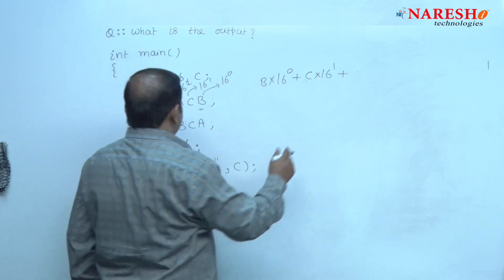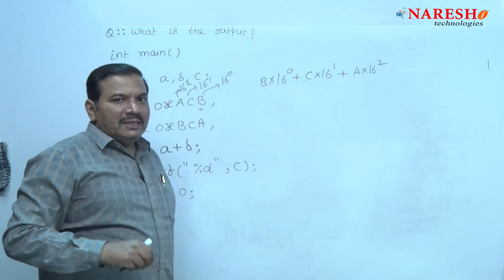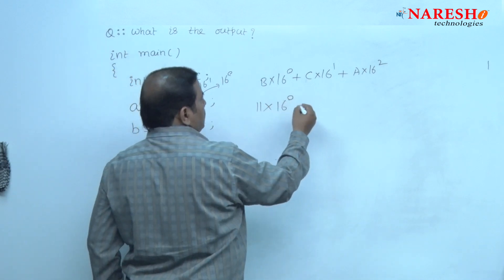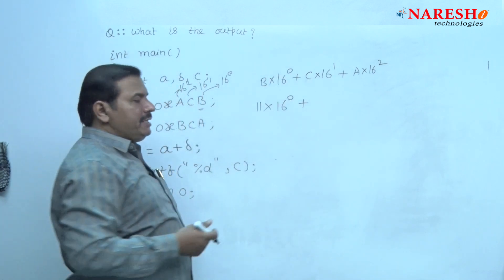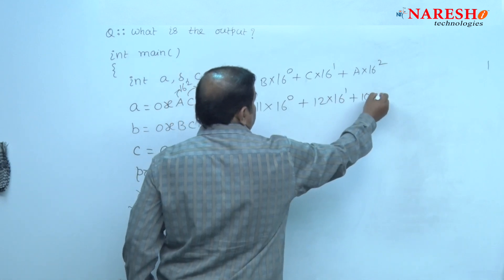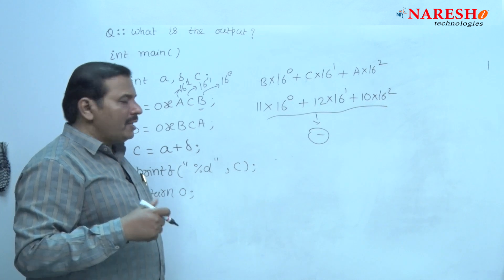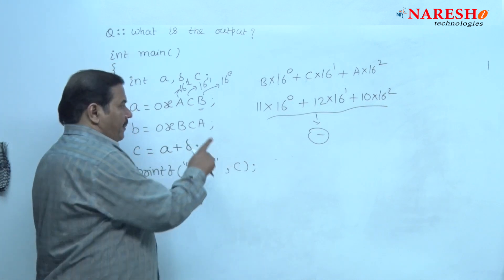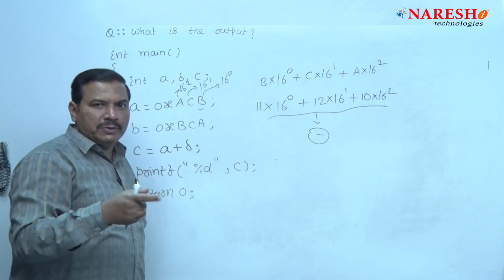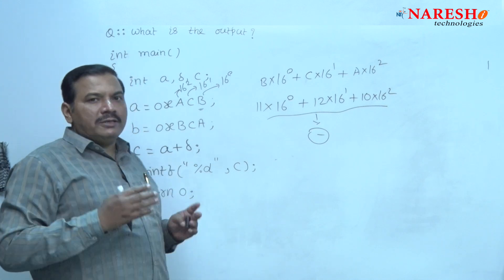So for ACB: C into 16 power 1 and A into 16 power 2. The decimal value of B is 11, so 11 into 16 power 0, plus decimal value of C is 12, so 12 into 16 power 1, plus A is 10, so 10 into 16 power 2 — this gives one equivalent decimal value. Similarly, convert BCA into decimal: A into 16 power 0, plus C into 16 power 1, plus B into 16 power 2, giving another decimal value. Add these two decimal values to get the answer in decimal format.